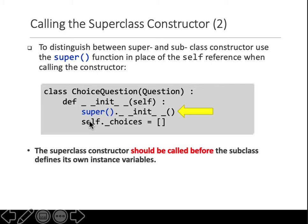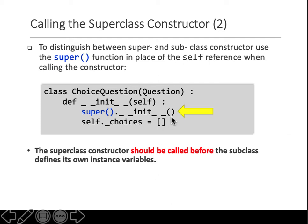Whenever we define a constructor, we do not call it — it is called implicitly at the creation of the object. However, if you define a subclass, then in the subclass constructor you have to call the constructor of the superclass. The way to do that is the keyword 'super', open-close parentheses, then a dot, then double underscores, 'init', double underscores, with empty parentheses — no spaces in between.